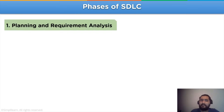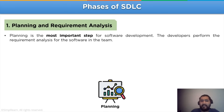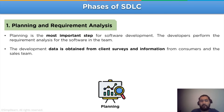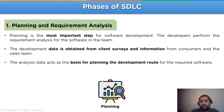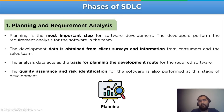Let's take a look at the individual phases of SDLC. The first phase is planning and requirement analysis. Planning is the most important step for software development. The developer performs the requirement analysis for the software in the team. The software development data is obtained from client surveys and information from consumers or the sales team. The analysis data acts as the basis for planning the development route for the required software, and is also used to check for any risk and quality assurance at different stages of SDLC.